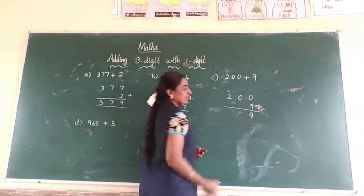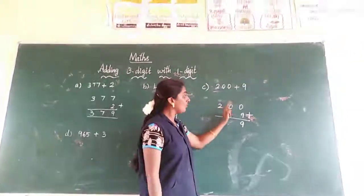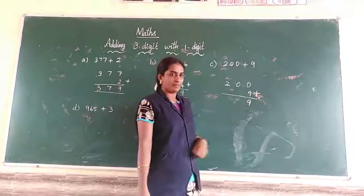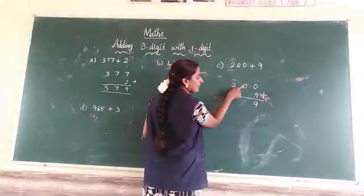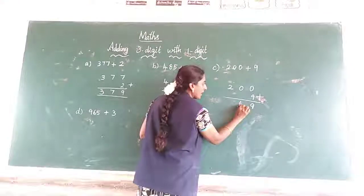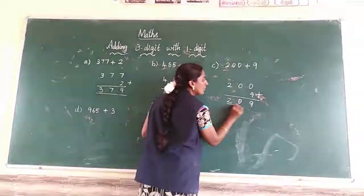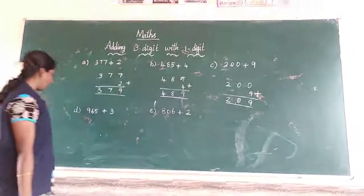When we add 0 with any number, the given answer is same number. You have understood. Next, look at the 10 space, nothing. So directly writing the answer. Next, 100 is also. So 200 and 9. Next, we go to D sum.